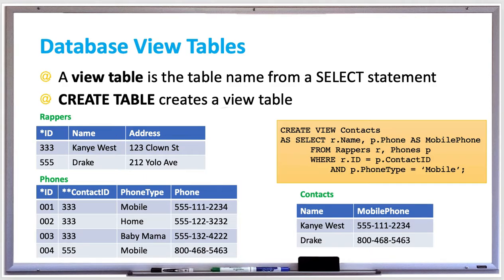Views have the advantage of protecting your sensitive data by allowing you to exclude columns with sensitive information like a social security number or credit card number. They also allow you to save complex or optimized queries by querying view tables instead of base tables for future queries.